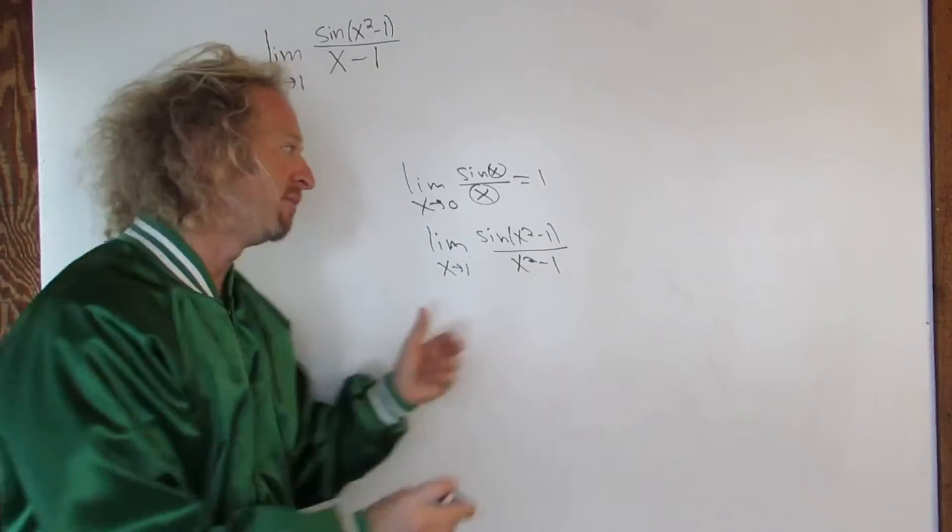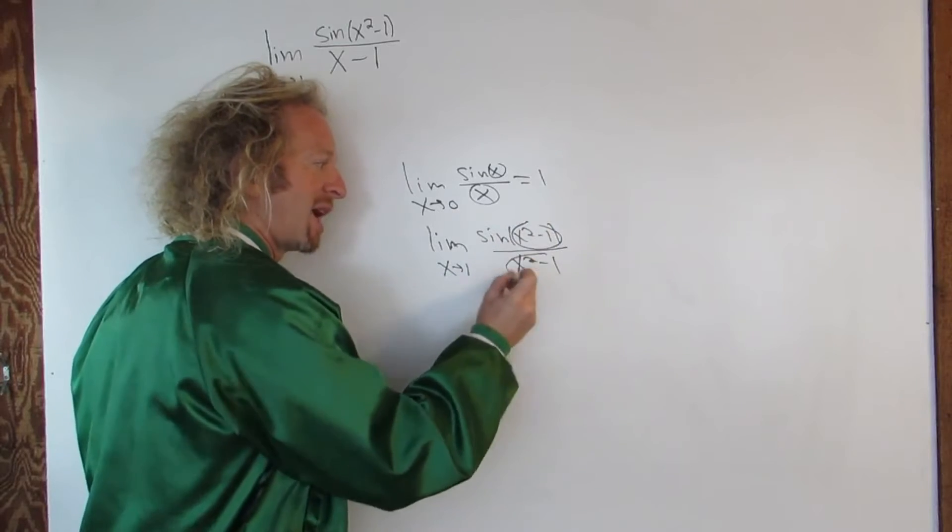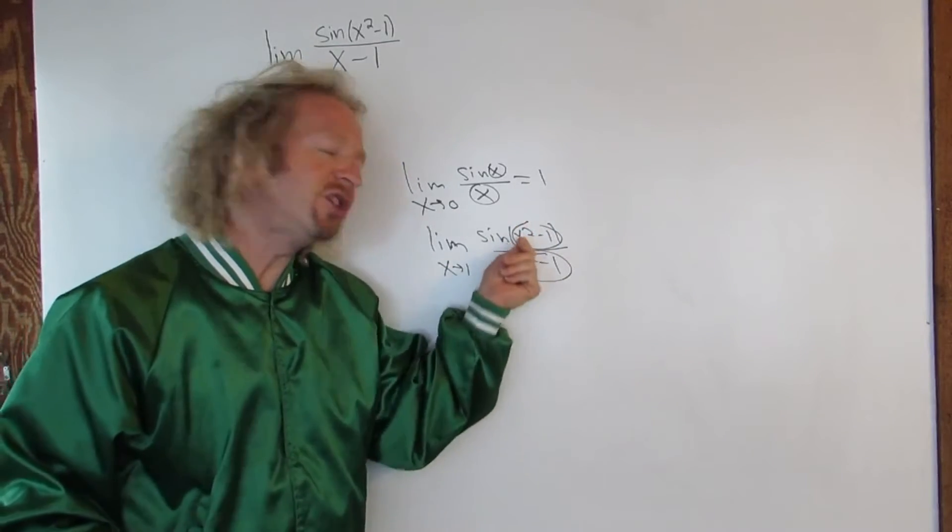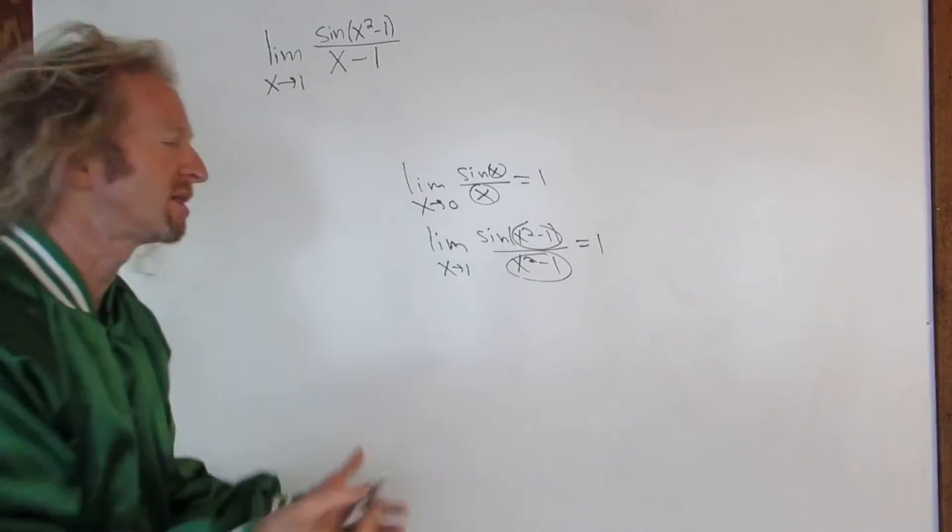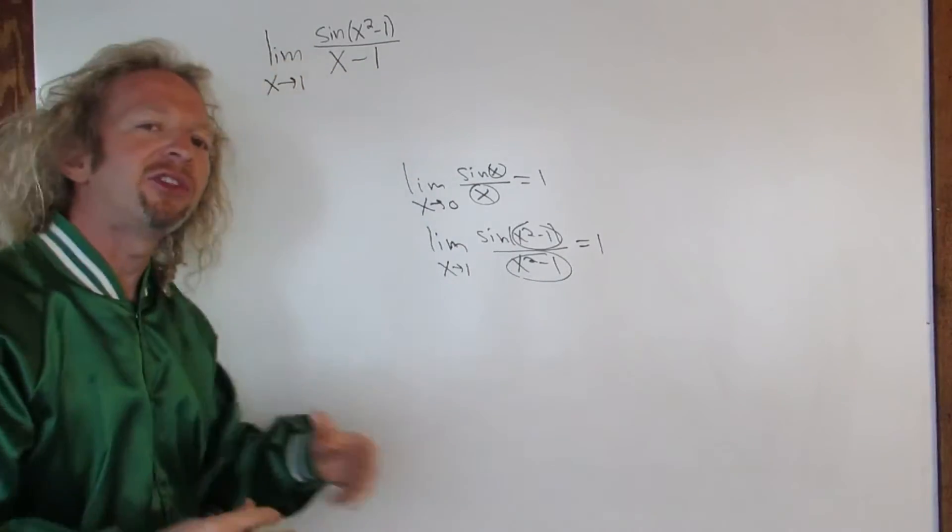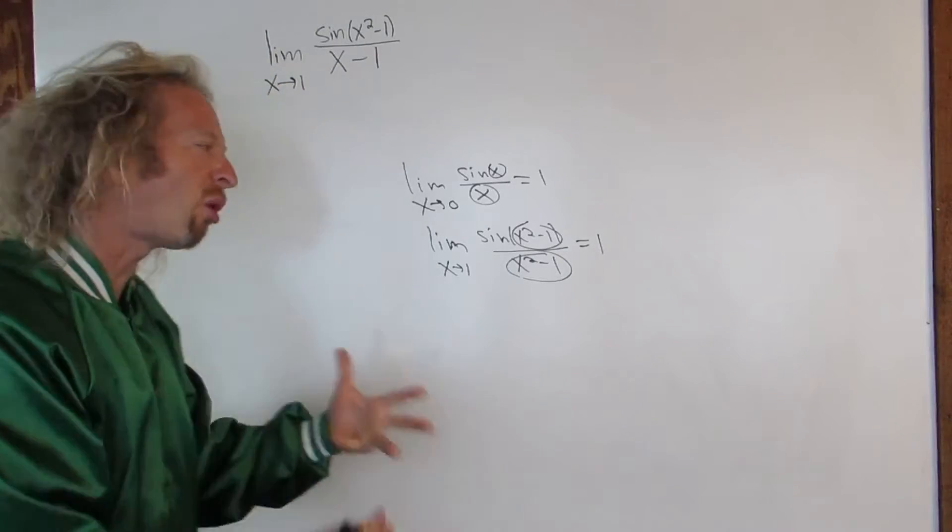This would be good enough, because these match, and when x approaches 1, you get 0 over 0. So this would be 1. It would be okay to make that step. You could make a substitution, and then you could justify it.